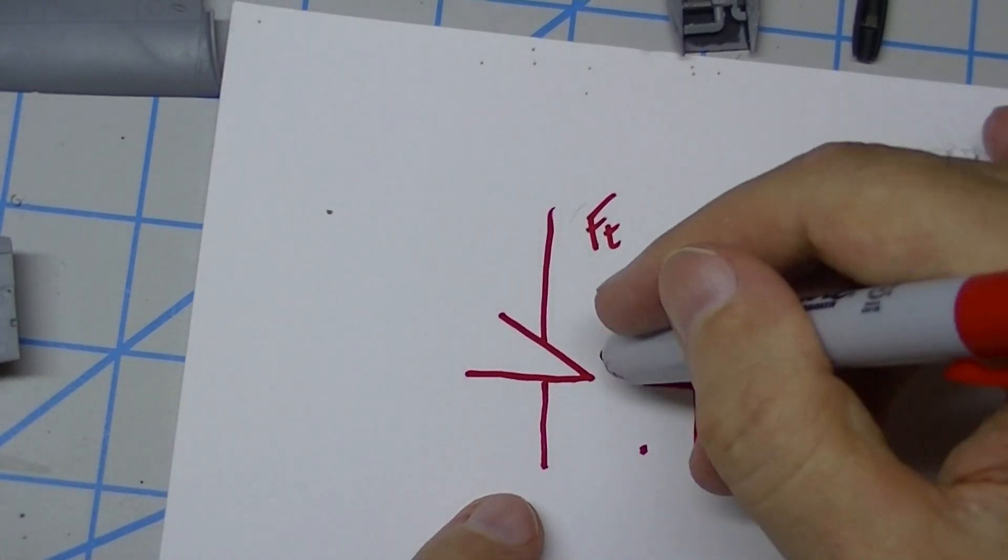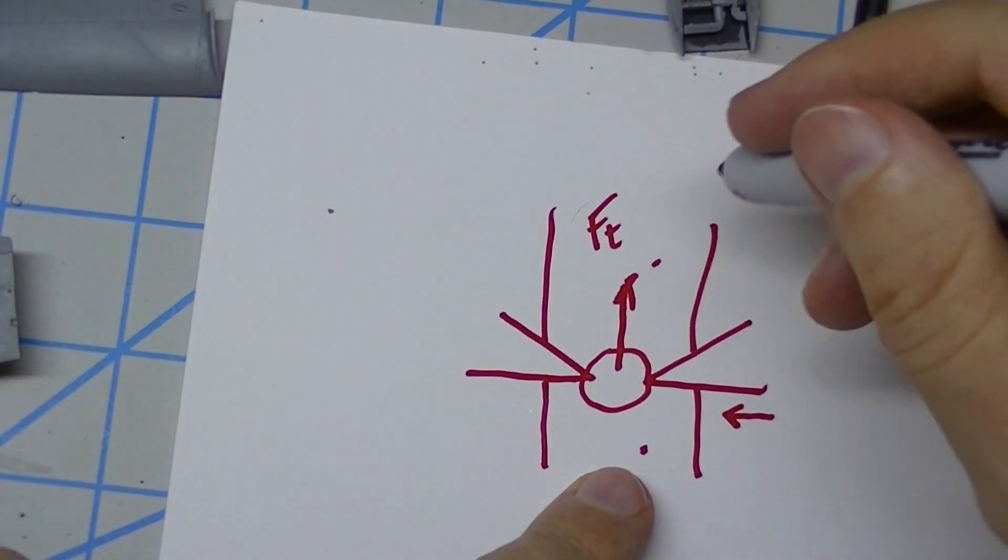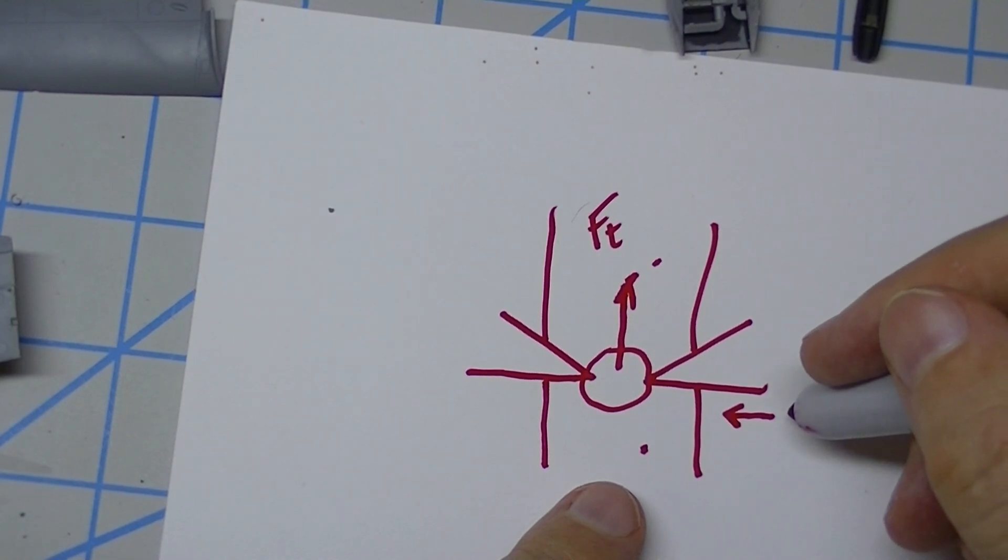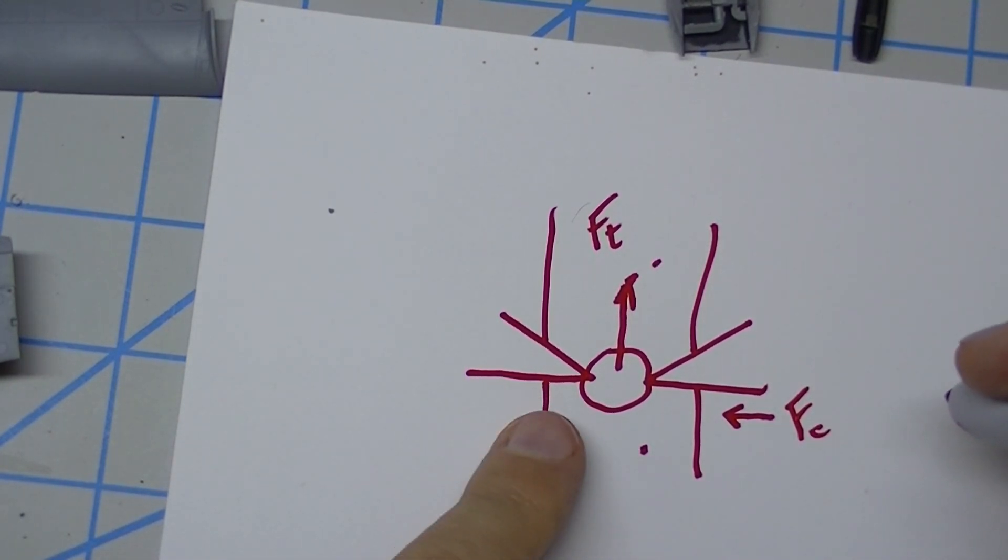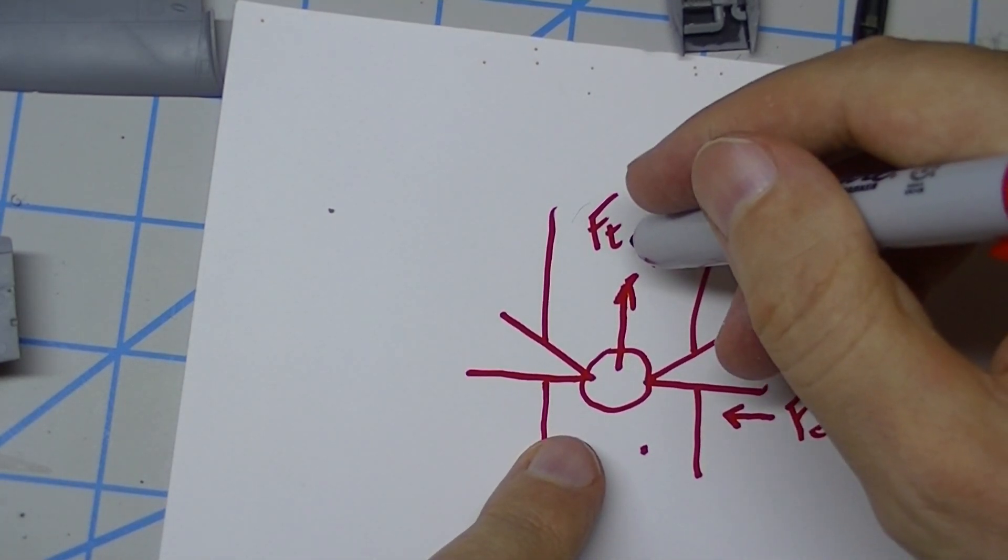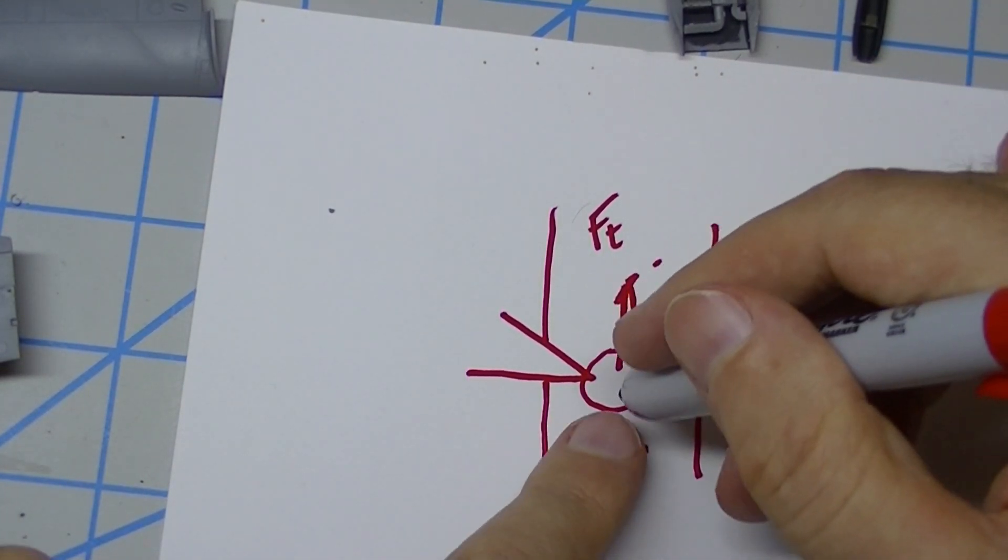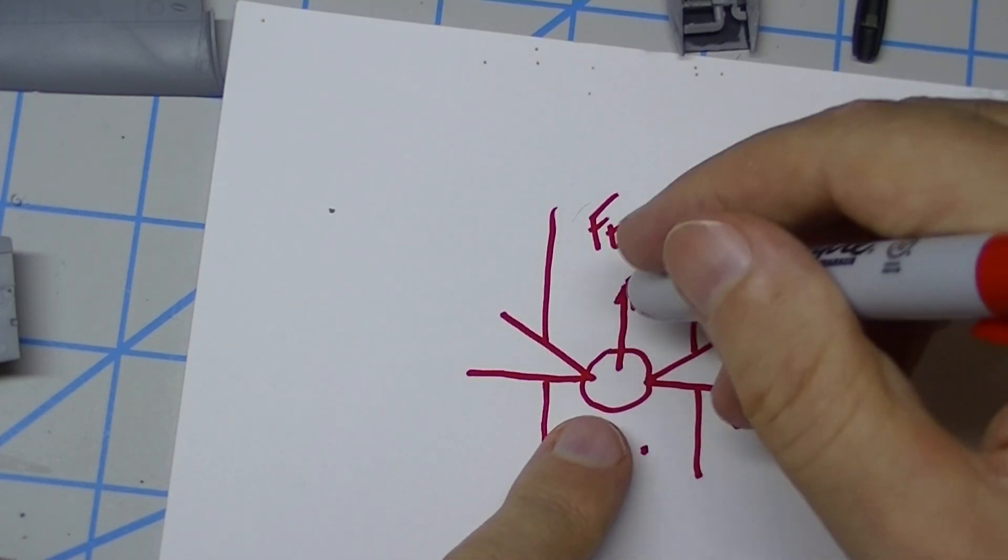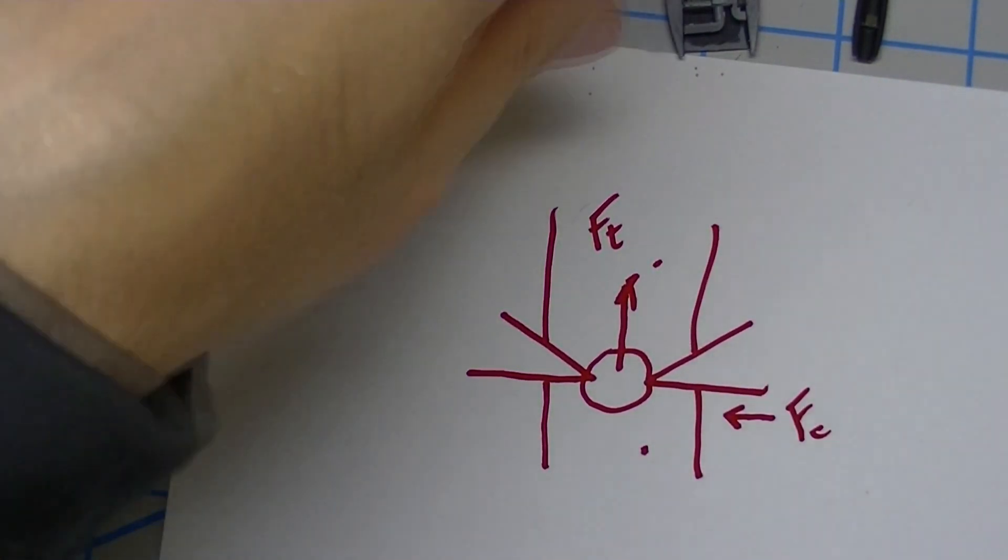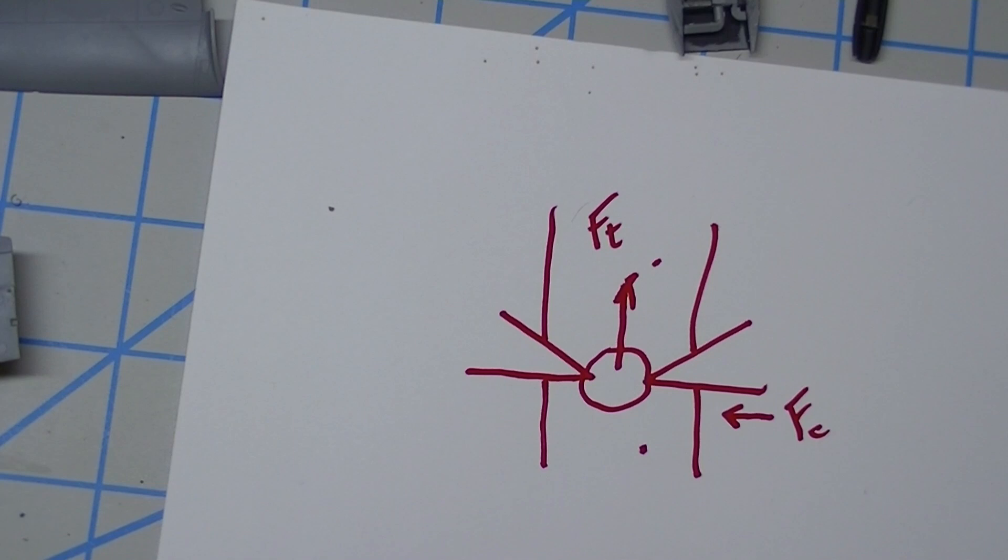And what that's doing is in this zone right here, it's basically stretching the material. So if your cutting force, call that Fc - if your cutting force is less than your tensile force, what's going to happen is it's going to snap. It's going to stretch and deform and then it's ultimately going to snap.